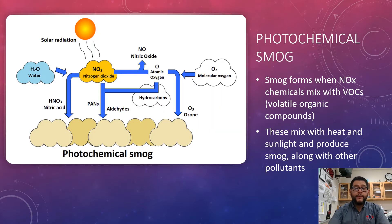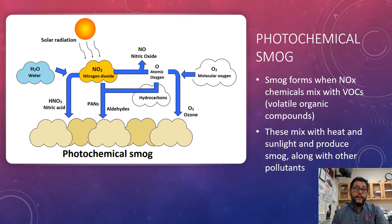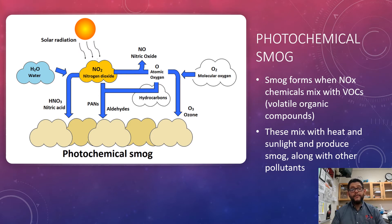So we look here, and we mentioned smog in the last video, but the way this works is it involves solar radiation combining with things like nitrogen oxides — our NOx chemicals. What happens is those end up reacting with oxygen in the atmosphere, and also reacting in the atmosphere with the presence of VOCs, which are volatile organics, and that ends up forming photochemical smog.